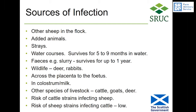Anything where there's faeces is a risk — if you were to spread slurry on grazing fields and there had been cattle passing the Johne's disease bacteria in their faeces, then that would be a potential risk. Wildlife such as deer and rabbits can also be infected and carry it. Particularly in the later stages of infection, it is possible for it to cross the placenta to the unborn lamb, and it is also spread in colostrum and milk.